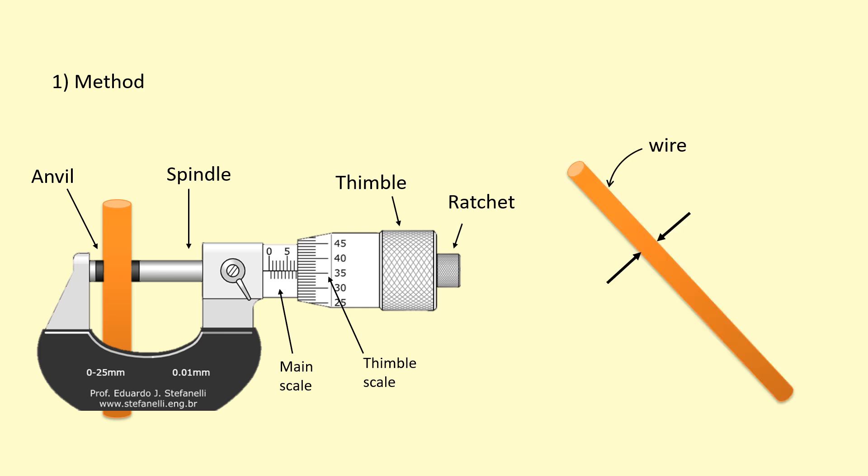Make sure you take some readings at different points, at different orientations along the wire, and you find an average for the diameter because you're going to use that to find the cross-section area of the wire.